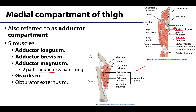The adductor magnus as a whole is actually quite posterior-medially placed, which makes sense that the larger bulk of this muscle would head back more posteriorly and not further medially, to reduce the bulk in that region. But oftentimes you can see a little bit of it from this anterior view.